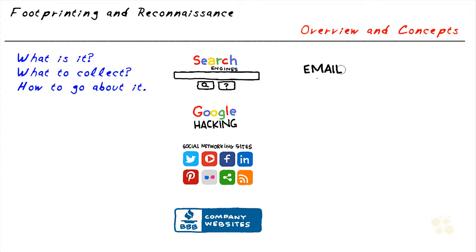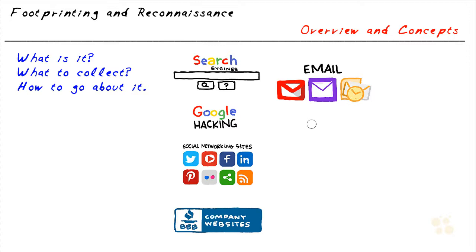Another great source of information is email. It's amazing what we can extract just by looking at the header of an email message. We can find the address from where it was sent, the sender's IP address, the sender's mail server, information about the authentication mechanism being used, the sender's full name, and a bunch of other details — useful both as a potential attack vector and for the raw information available, including names and IP addresses.